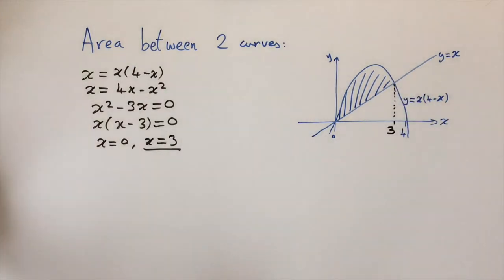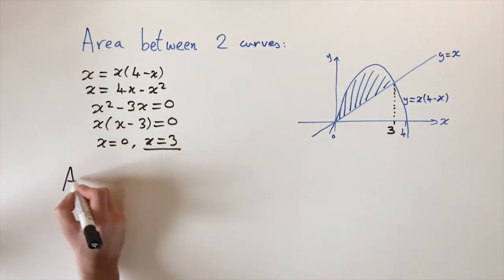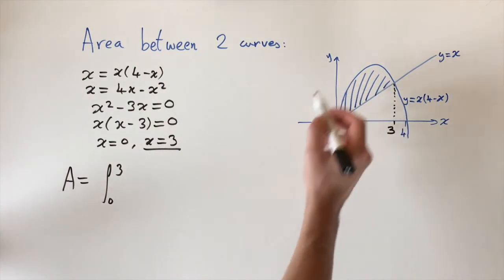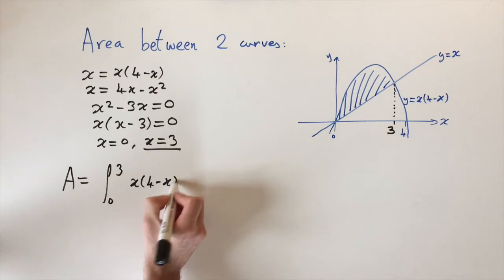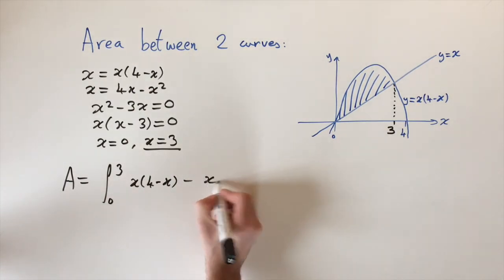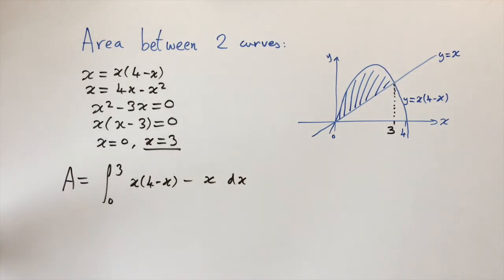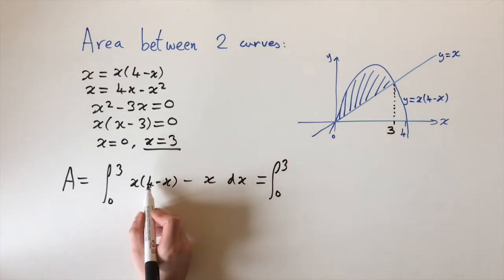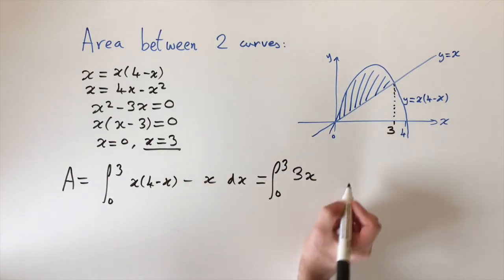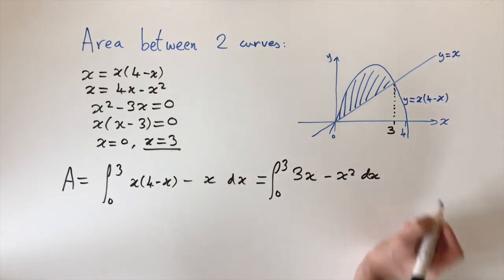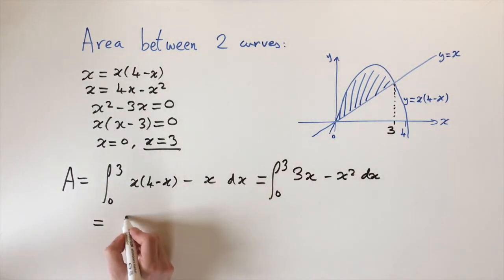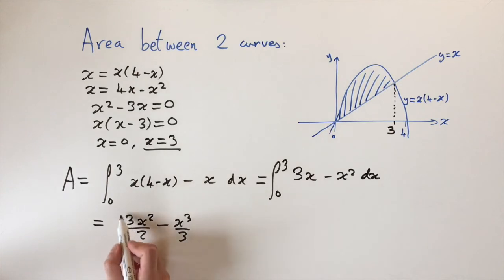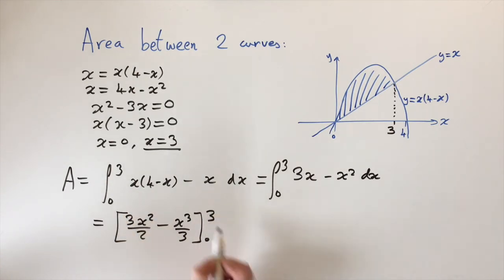Now we know the area A is the integral from 0 to 3 of the top function x(4 − x) minus the bottom function x, all dx. Expanding the integrand: 4x − x − x² = 3x − x². Integrating gives: 3x²/2 − x³/3, evaluated between the limits 0 and 3.